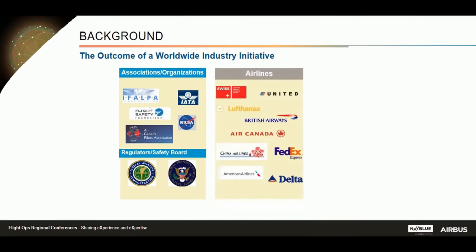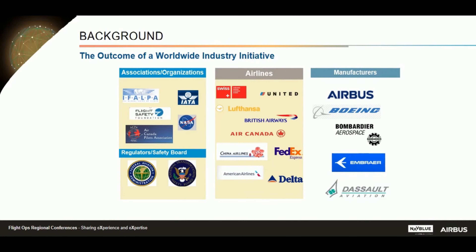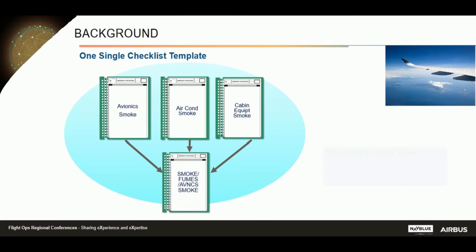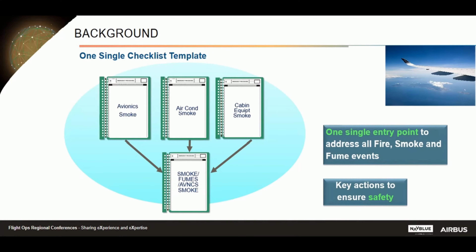Our smoke procedure comes from an industry initiative created after some significant events, gathering associations, airlines, and the main manufacturers worldwide. The procedure is the outcome of a huge body of work that started in early 2005, aiming to provide flight crew and cabin crew with procedures to safely manage all in-flight fire, smoke, and fumes, and to agree on a common template. One of the main outcomes was to merge three separate smoke procedures into a single one: the smoke, fume, and avionic smoke procedure, in line with feedback received from operators.